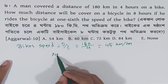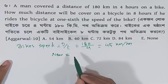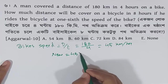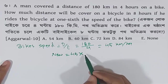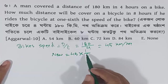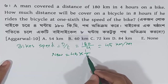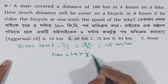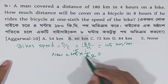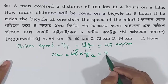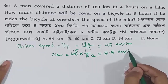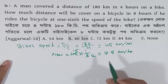Now, the new speed of the bicycle is 1/6th of the bike's speed, which is 1/6 of 45. So the bicycle speed is 7.5 km per hour.